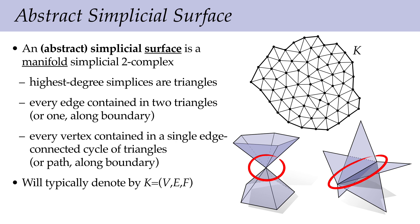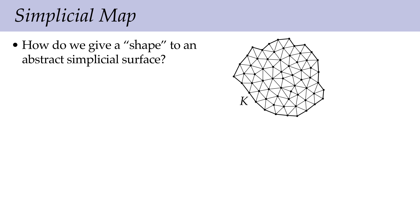In terms of notation, we typically denote our simplicial complex as K = (V, E, F), where V are vertices, E are edges, F is the set of faces, and K is for complex — a German convention. The important thing to remember about an abstract simplicial surface is that it has no shape; it only describes the connectivity of the surface.